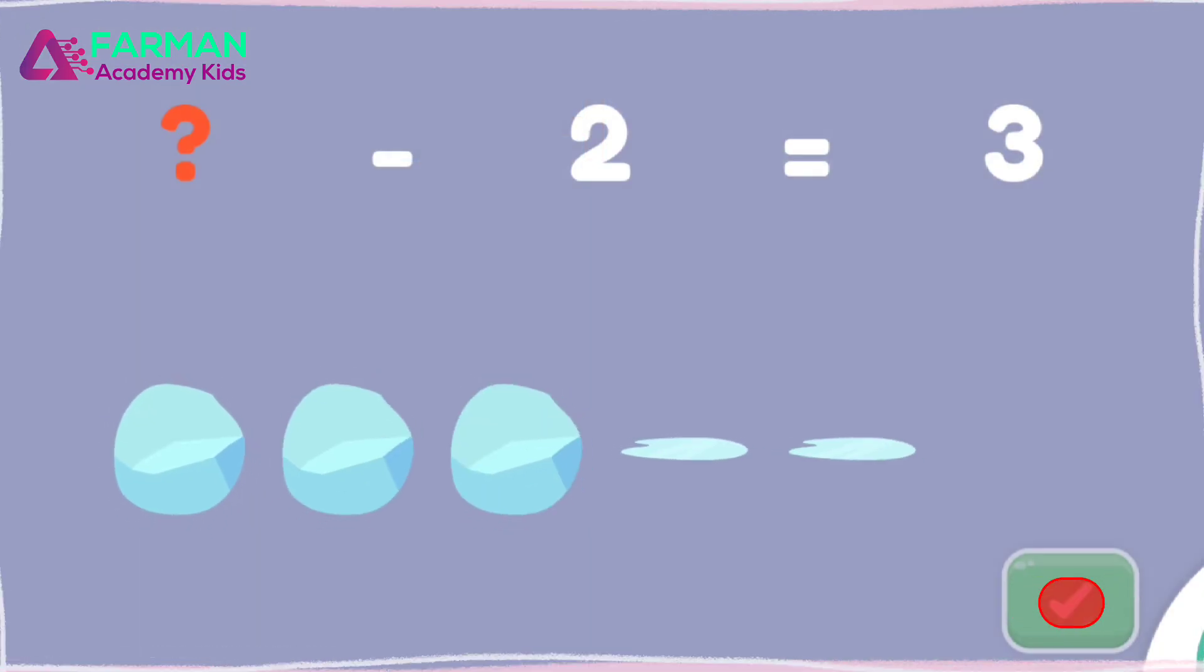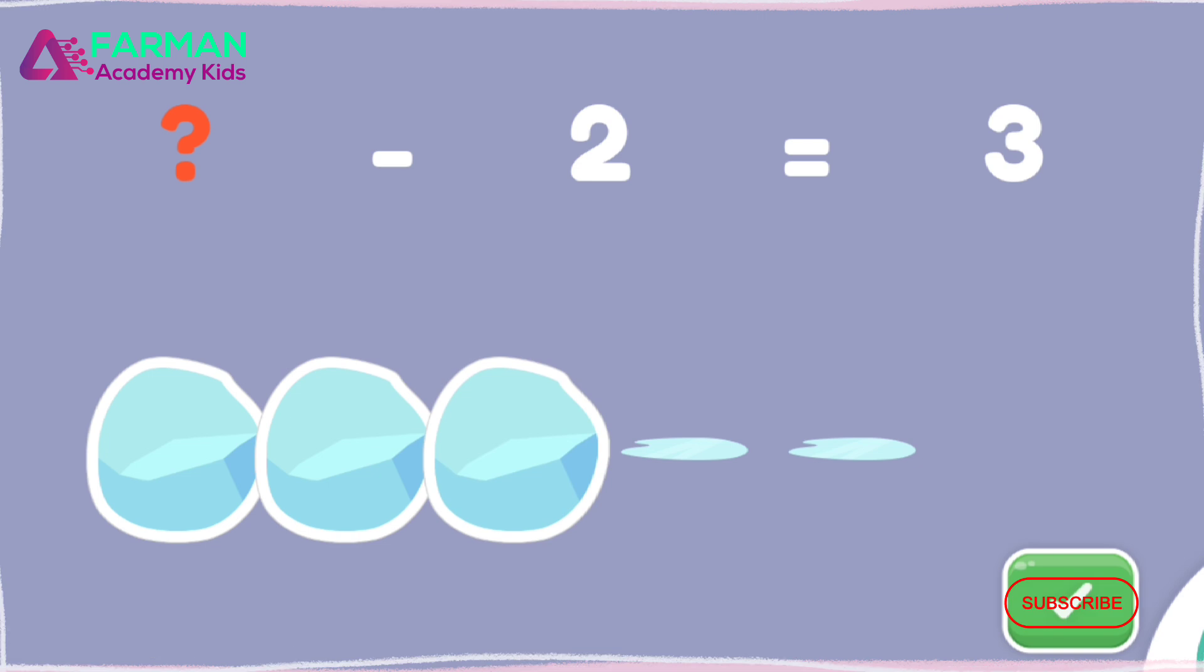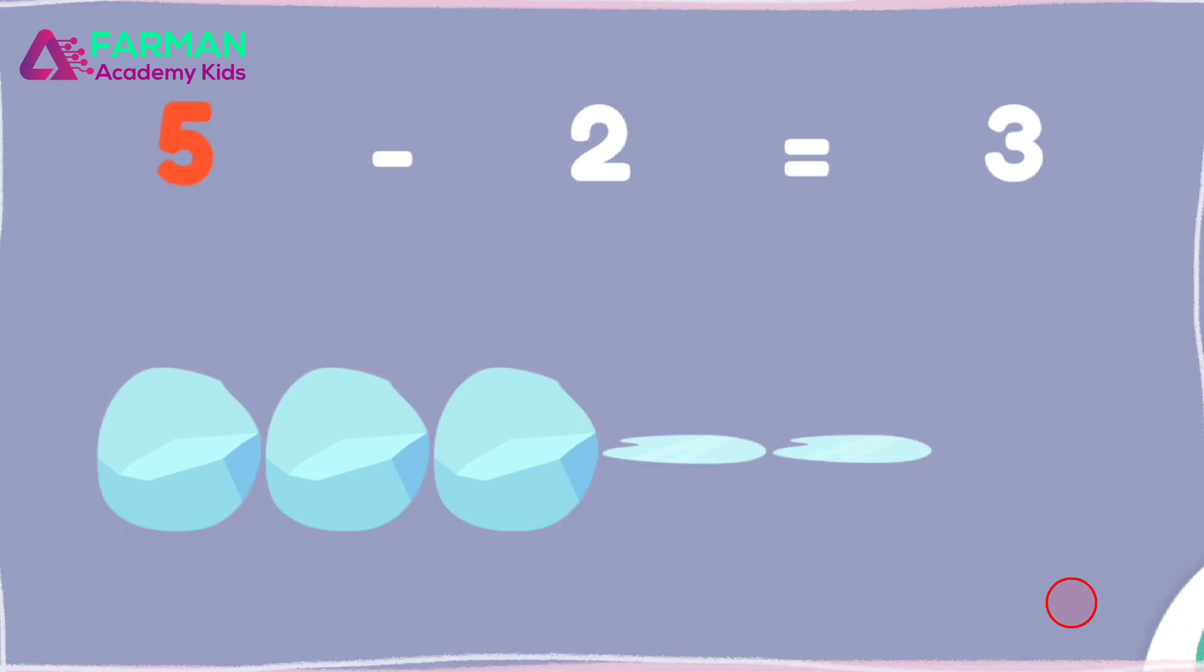What minus two equals three? Tap all the snowballs and puddles to count. Make sure all of the snowballs and puddles are highlighted. What minus two? Five minus two equals three.